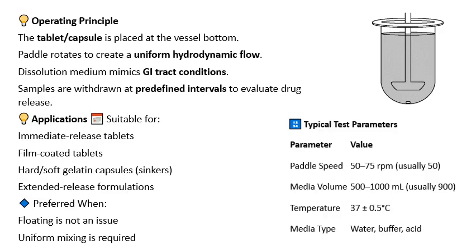Typical test parameters for USP apparatus 2 are a paddle speed of 50 or 75 rpm, but usually it is operated at 50 rpm, which is considered the standard dissolution parameter and mild condition. Media volume is 500 ml to 1000 ml, but usually 900 ml is used. Temperature of the dissolution medium is maintained at 37 degrees Celsius. Media type may be 0.1 N HCl, buffers, and purified water.